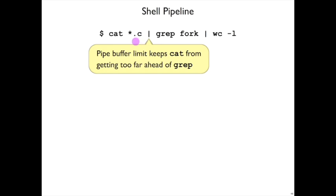Like it would be bad if you were working on very large files. All cat has to do is copy data, so it's very fast. Grep has to look for matches. If cat could just go as fast as it wanted to, it would generate a lot of bytes for grep to process. But the pipe limit ensures that this process doesn't get too far ahead of this other process, and that's one of the secrets to maybe making these pipelines work well.